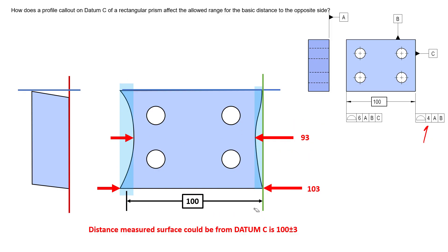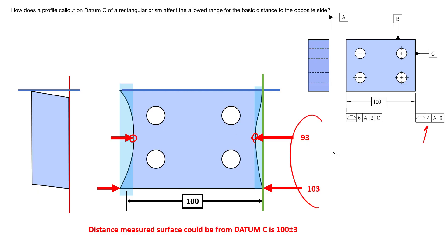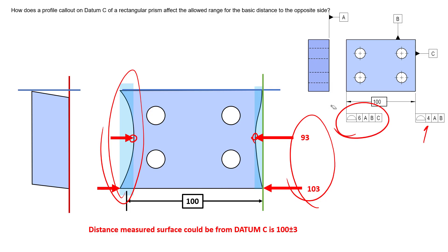Going the other direction from the high point that establishes datum C — 100 millimeters over, then adding three millimeters — gives a worst case caliper measurement of 103 millimeters. So element-to-element with a caliper or micrometer, we can measure between 93 and 103 millimeters. However, when locating any element of the left surface per the feature control frame, it is 100 plus or minus three from the datum.